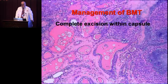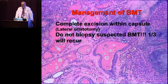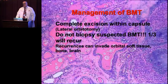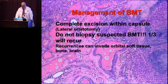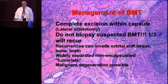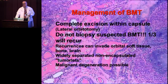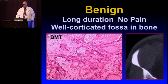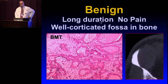Management: take the whole thing out within its capsule. Do not biopsy a benign mixed tumor. If you biopsy it, one-third will recur. Recurrences can invade the orbital soft tissues, bone, and brain — you get widely separated non-encapsulated tumorlets that are impossible to eradicate, and over time some have the propensity to undergo malignant degeneration. Signs suggesting a benign lesion include long duration of symptoms, absence of pain, and a well-corticated fossa in the bone.